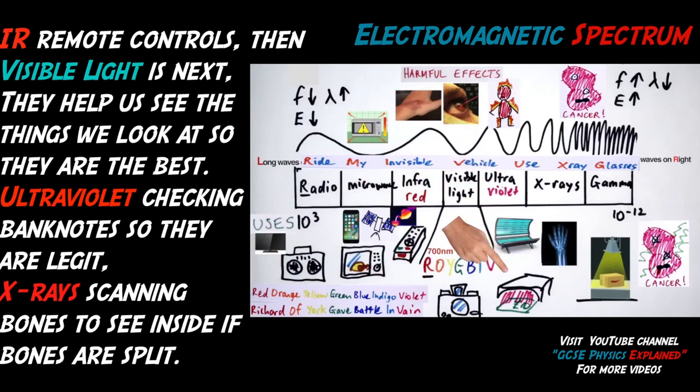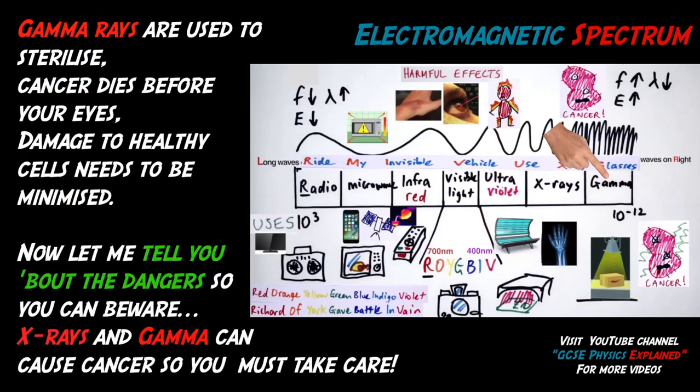Ultraviolet checking banknotes, so they are legit. X-ray scanning bones to see inside if bones are split. Gamma rays are used to sterilize, cancer dies before your eyes. Damage to healthy cells needs to be minimized.